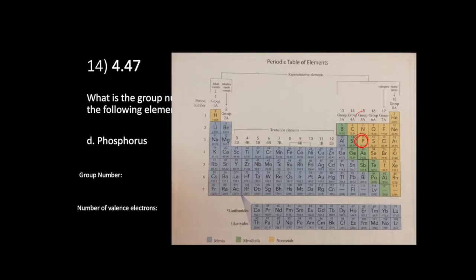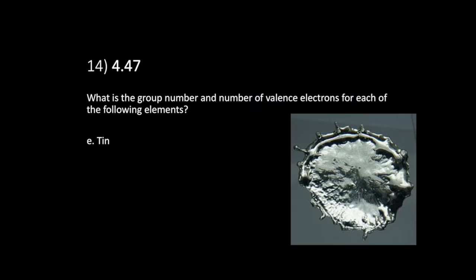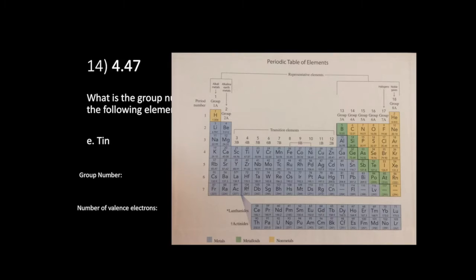How about phosphorus? Phosphorus is on the right side at the top; it's in group 5A, so the group number is 5A. The number of valence electrons is the same as the group A number, so there are five valence electrons around a phosphorus atom, determining how the phosphorus can stick to or react with other stuff.